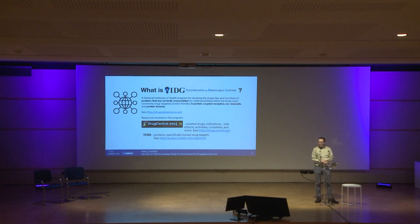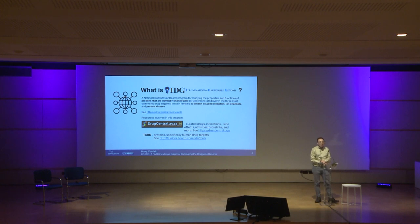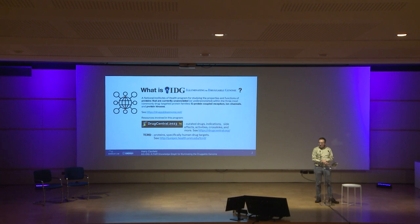The big resources we get out of what this program has done so far are these two on this slide. Drug Central, now in its most recent version, has actually just added a whole bunch of non-human drugs and their associated data, which is pretty neat. But I'll be focusing on human protein and drug interactions for the remainder of the discussion, as well as the TCRD, which is focused on those protein targets of the drugs listed in Drug Central, and that's online as well.